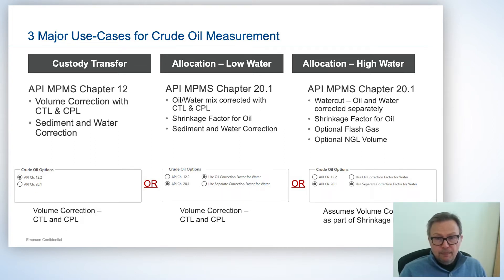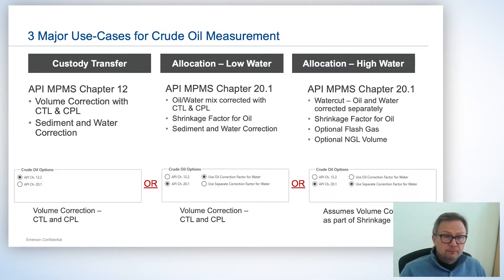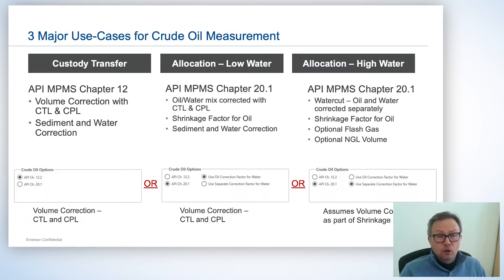When it comes to allocation there are two methods: low water and high water. In the low water method we essentially treat the oil and water mixture as one. We then apply a common CTL and CPL across the mixture, then apply a shrinkage factor, and that gives us our calculated oil flow rates and totals and water flow rates and totals.